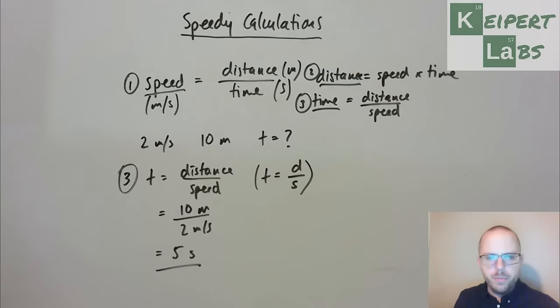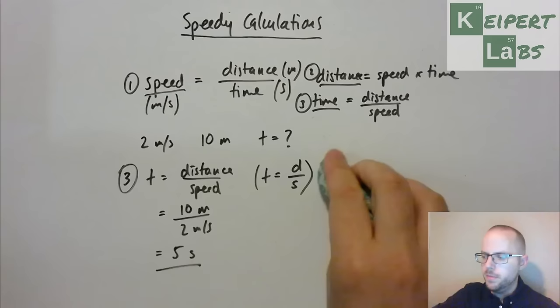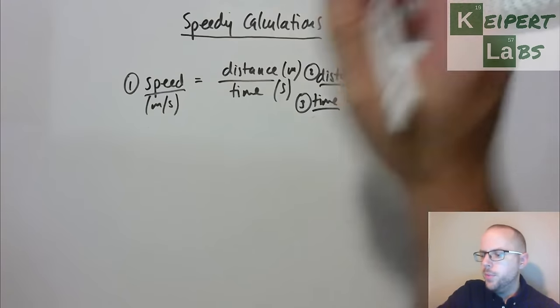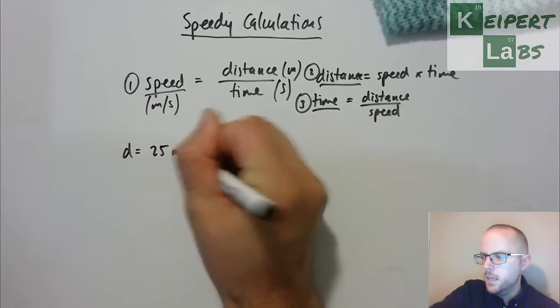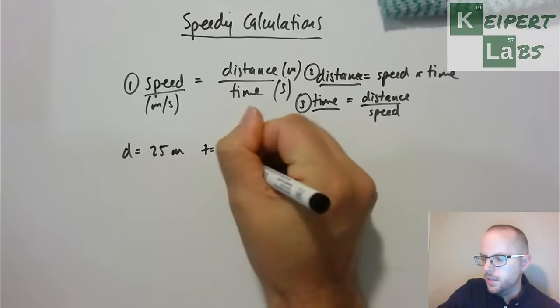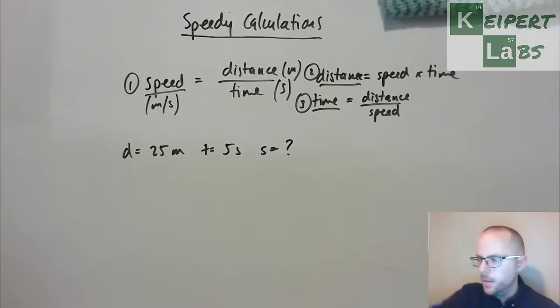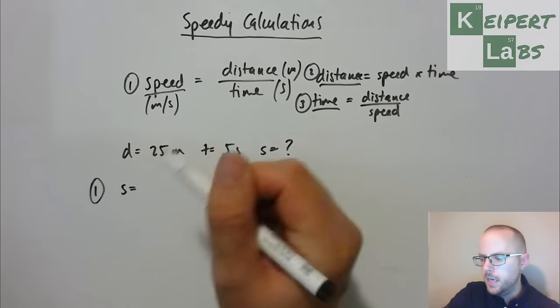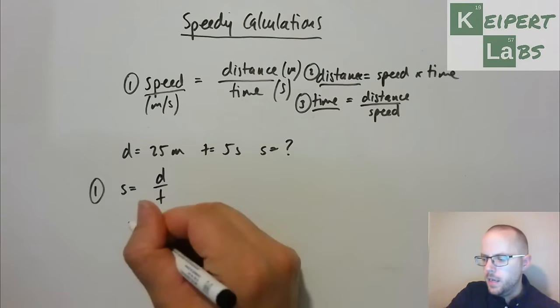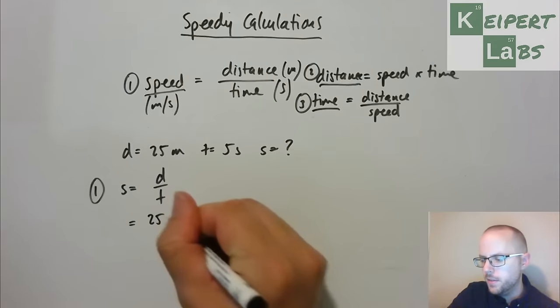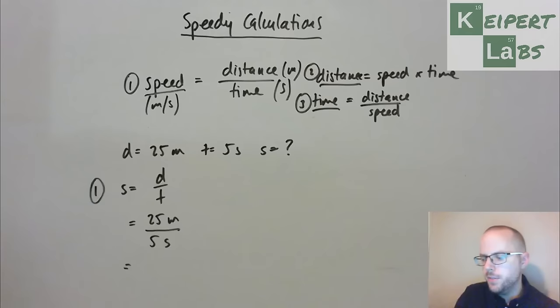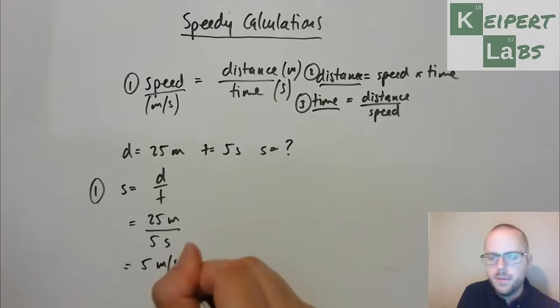So then the next one is saying, alright, if we travel a distance of 25 metres in a time of 5 seconds, what is our speed? So looking at our three formulas, the one that has speed equals something is version number one. So speed equals distance divided by time. And then for my distance, I substitute in my value of distance. For my time, I substitute in my value of time. And I can now do 25 divided by 5 gives me a speed of 5 metres per second.